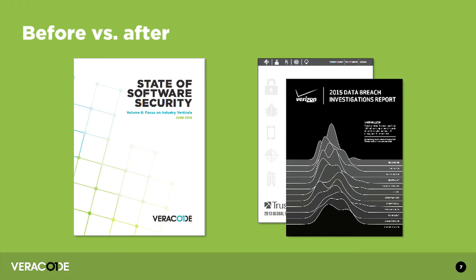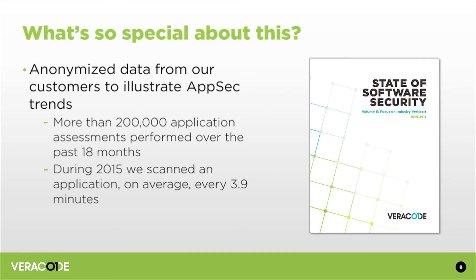Almost all of the information in today's talk comes from a report we released called The State of Software Security. We're on the sixth volume of that report. If you're familiar with the Verizon DBIR or similar reports, they talk about breaches. We talk about vulnerabilities in our customers' software before they get reached. We have over 1,000 customers, and the data in this report comes from over 200,000 application assessments performed over an 18-month period, from mid-2013 to the end of 2015. We're scanning applications at one every 3.9 minutes on average.